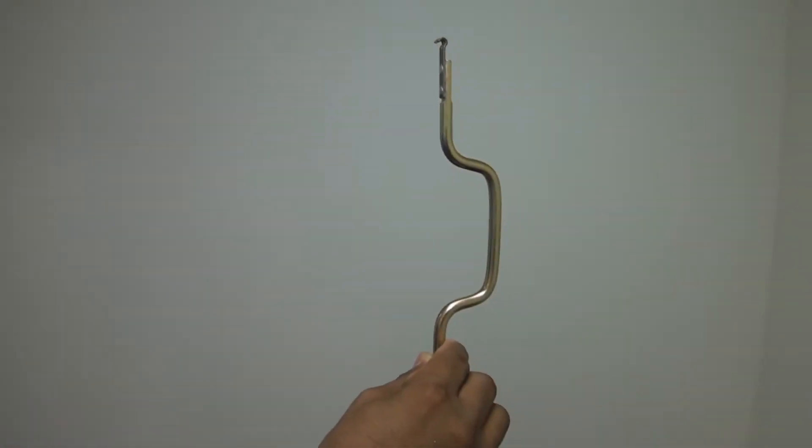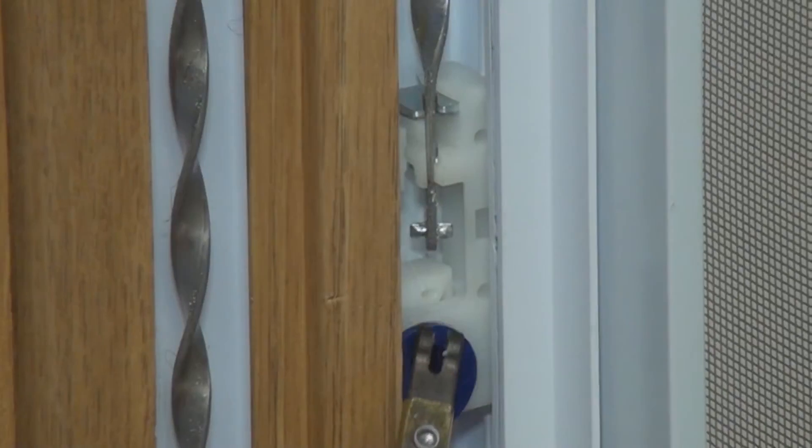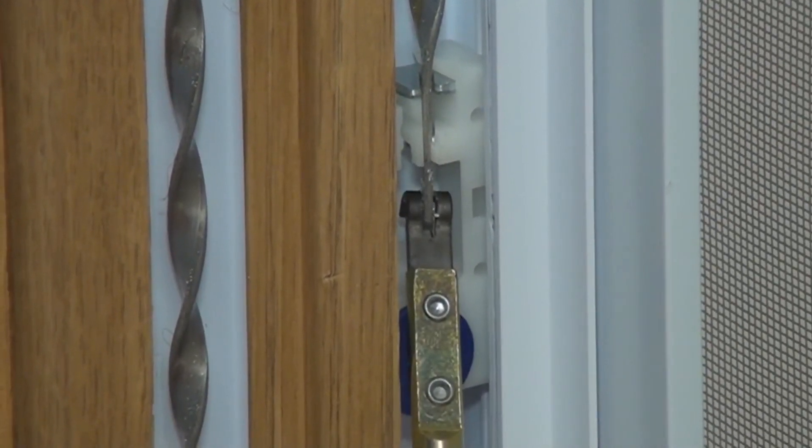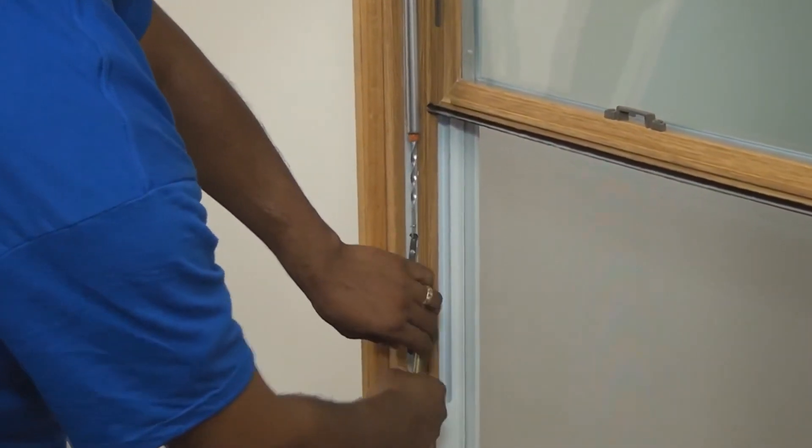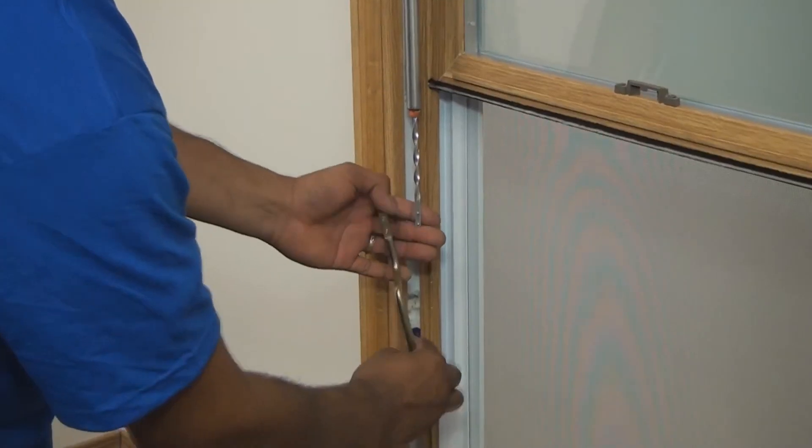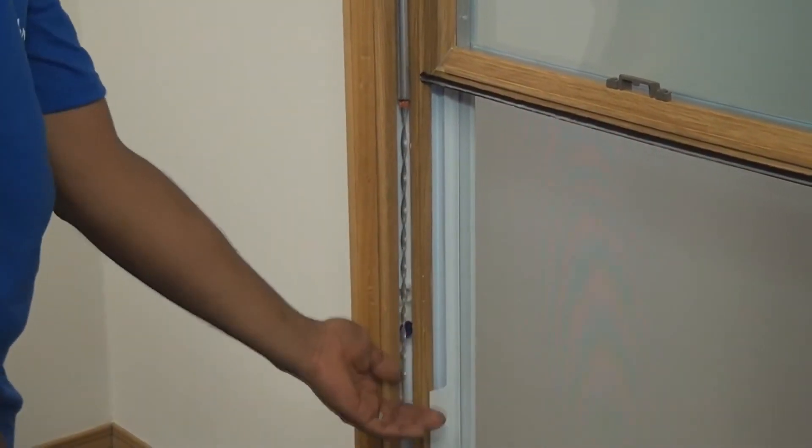Now, you will need the balancer tool. Grab onto the pegs using your balancer tool. Carefully unwind the balancer slowly, counter-clockwise, to release the pressure from the spring. Let the spiral mechanism drop.